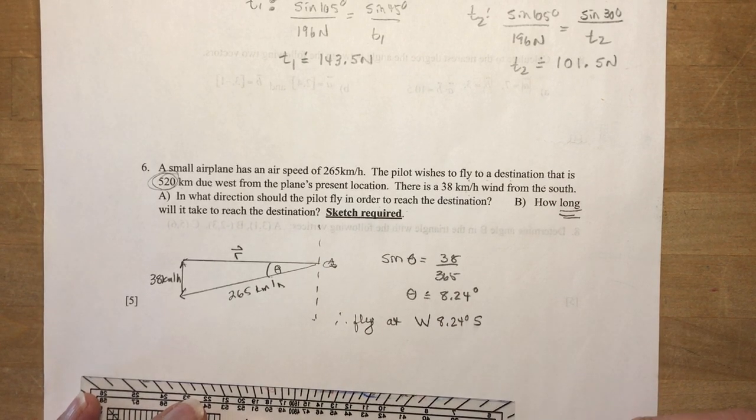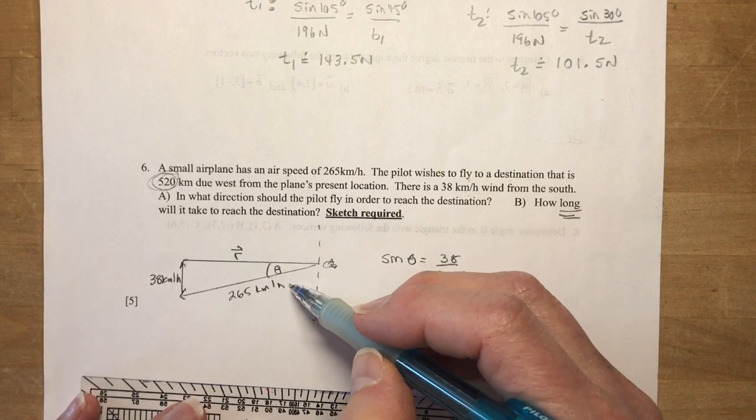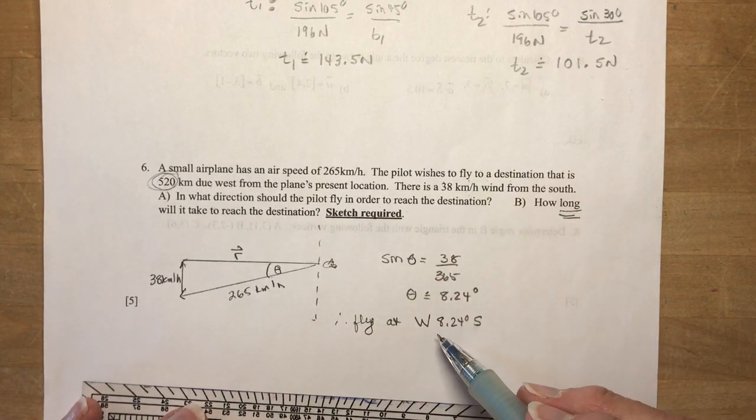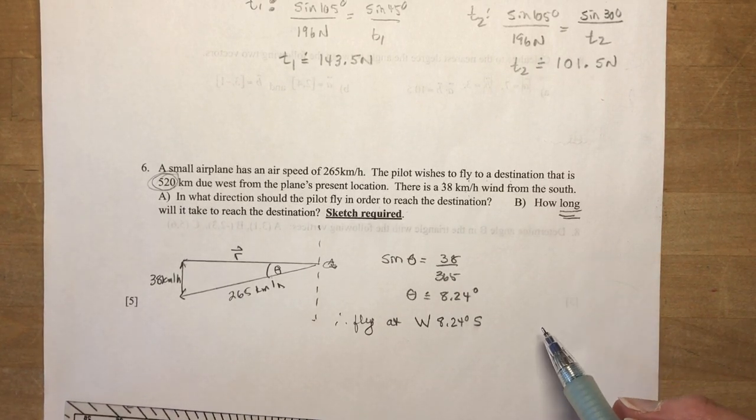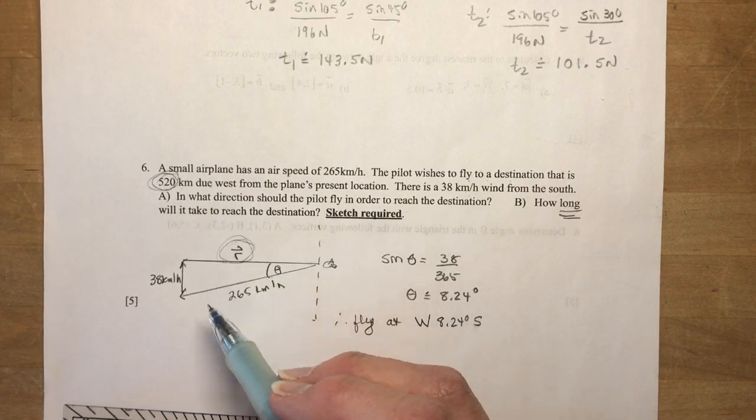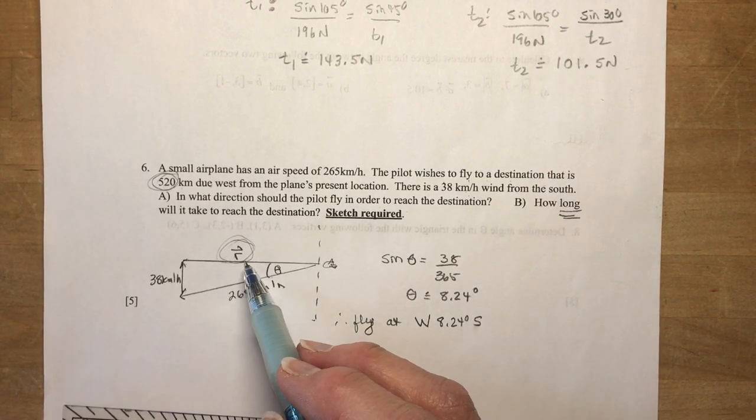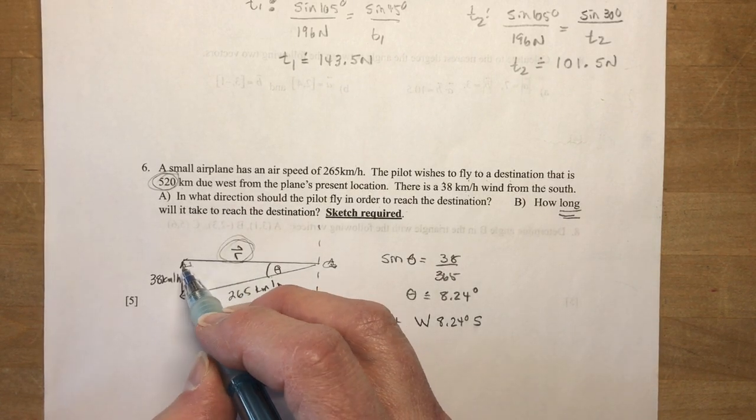Or your teacher might want you to say it the other way, like south and then so many degrees west. That will give you this really big angle, which would be just 90 minus 8.24. Okay, so how long will it take? So in order to find how long, I need to know this resultant velocity here, or the ground velocity, right? So that's a Pythagorean theorem question.